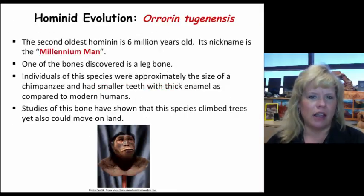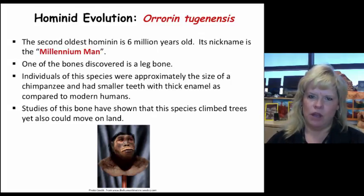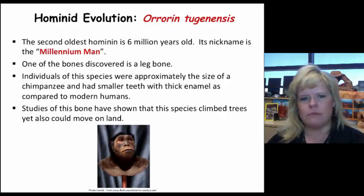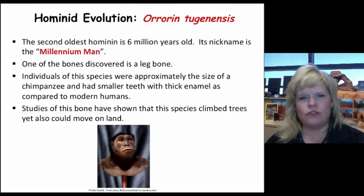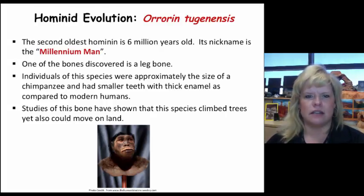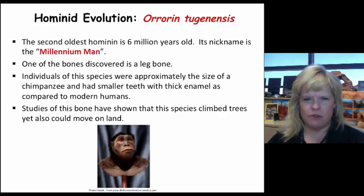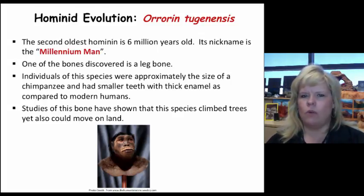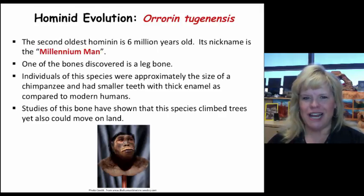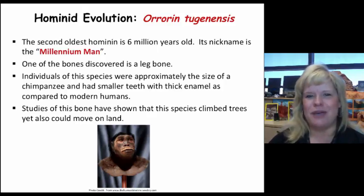Orrorin tugenensis, often referred to as the Millennium Man, came about around 6 million years ago. We have a very poor fossil record of these early groups — very few fossils indeed. One important bone has to do with the leg bone. These guys were not very big — about the size of a chimpanzee. They had smaller teeth with very thick enamel suited for a different type of feeding habit, and based on fossils, they still had traits enabling them to climb trees but also moved on land. The first clue of bipedalism is always where the vertebrae and spinal cord come into the brain.